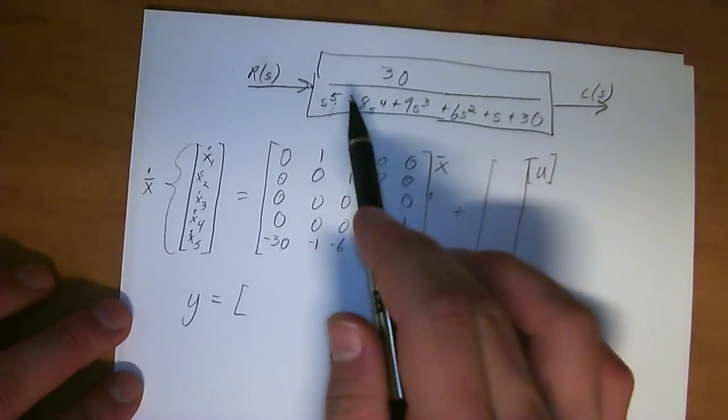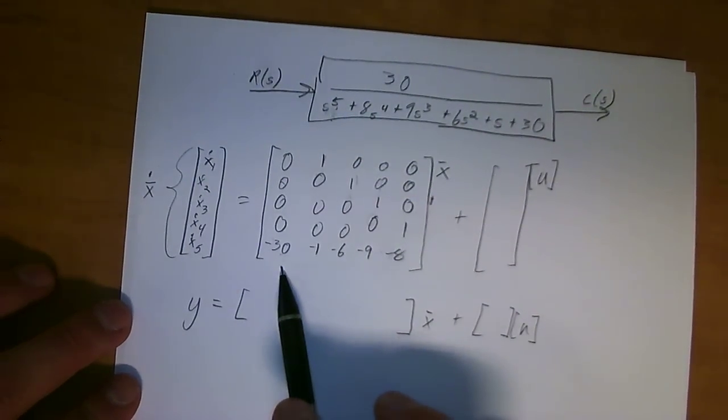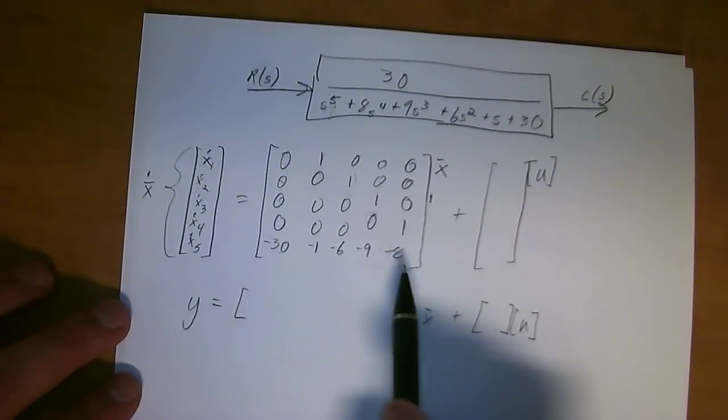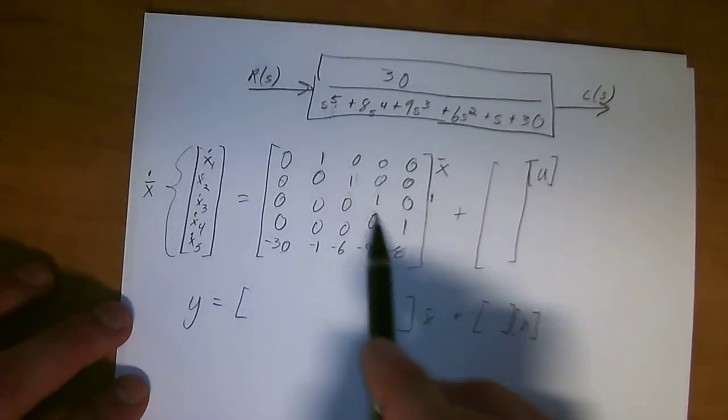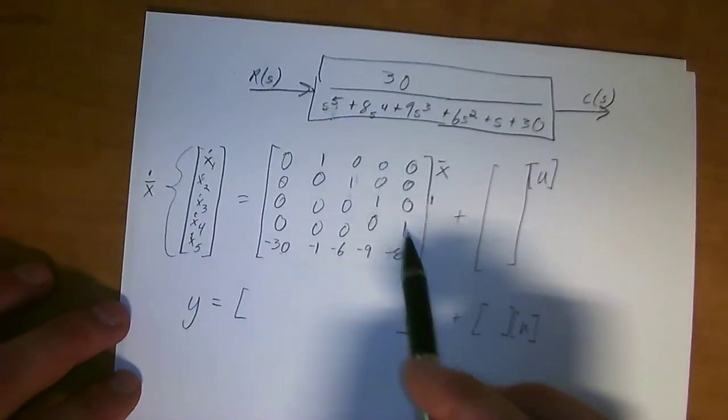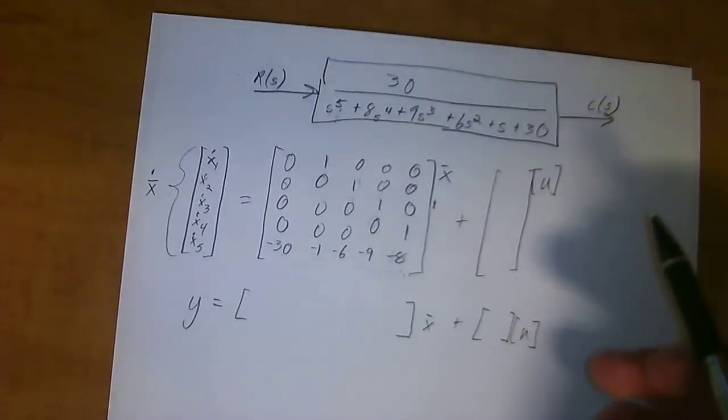And all the rest of these are going to be zeros. A pretty easy little thing to do. You just take the denominator of the transfer function, so long as it's in proper form, take the reverse order and negatives of those values of the coefficients, and put them in the lower part of the matrix, with ones on the upper diagonal, and then the rest of it is zeros.